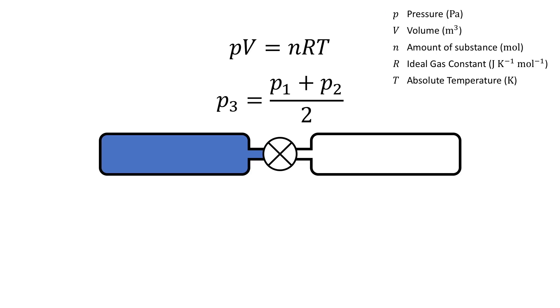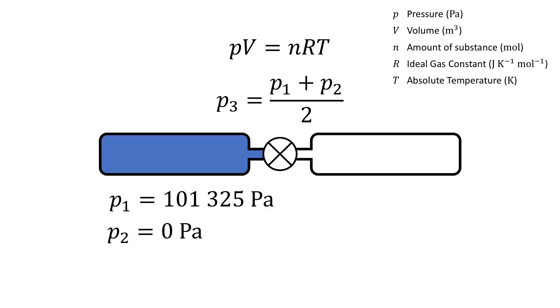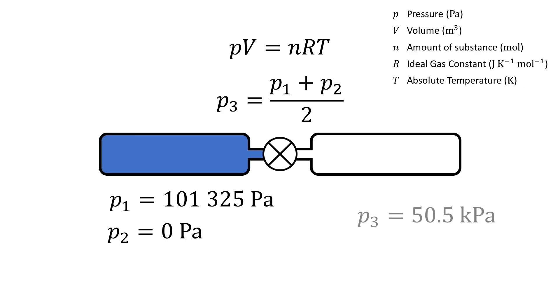Now we take on some examples. Let's say that we have atmospheric pressure in tube one at 101,325 Pascal — or just 101 kilopascal, but that detail will become important in a bit — and we have a vacuum in tube two. We don't really have a perfect vacuum, as such a thing does not exist, but let's say it is something like 1.3 times 10 to the minus 15 Pascal. We plug the numbers in and we get a resultant pressure of around 50.5 kilopascals.